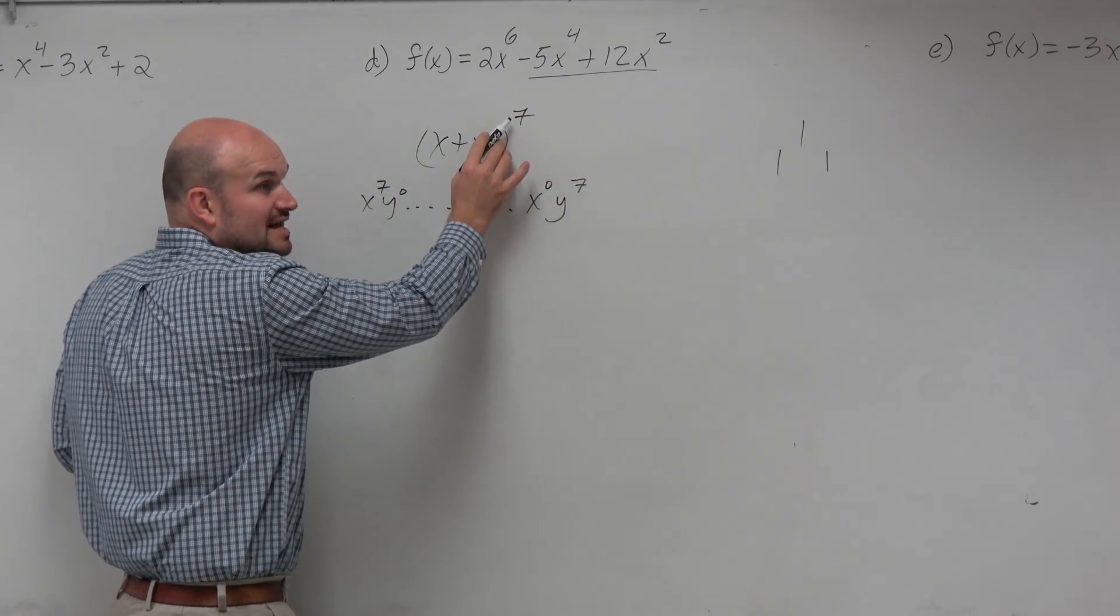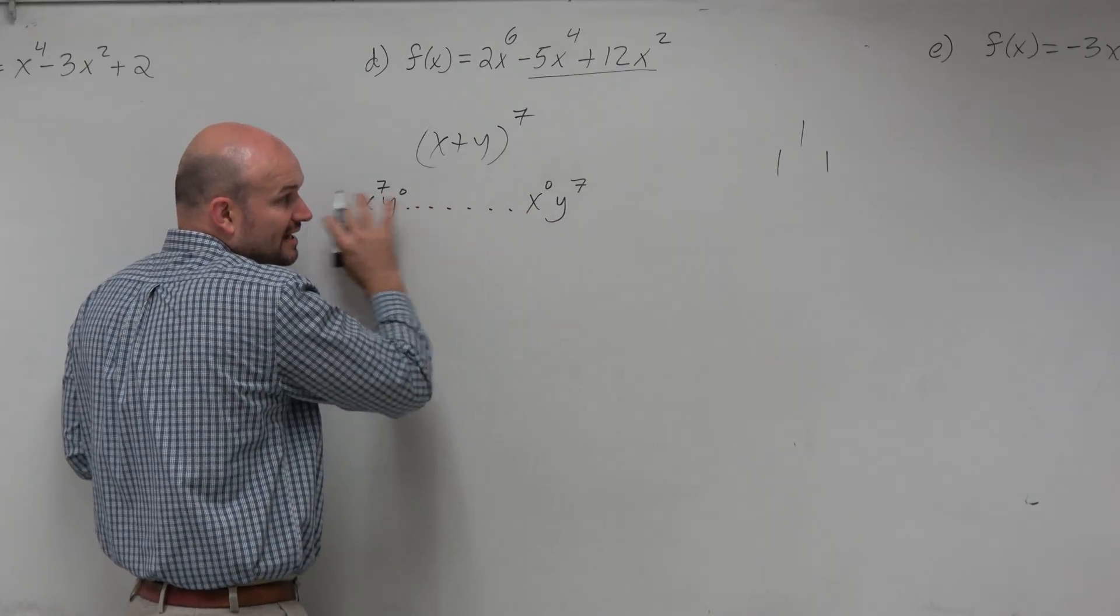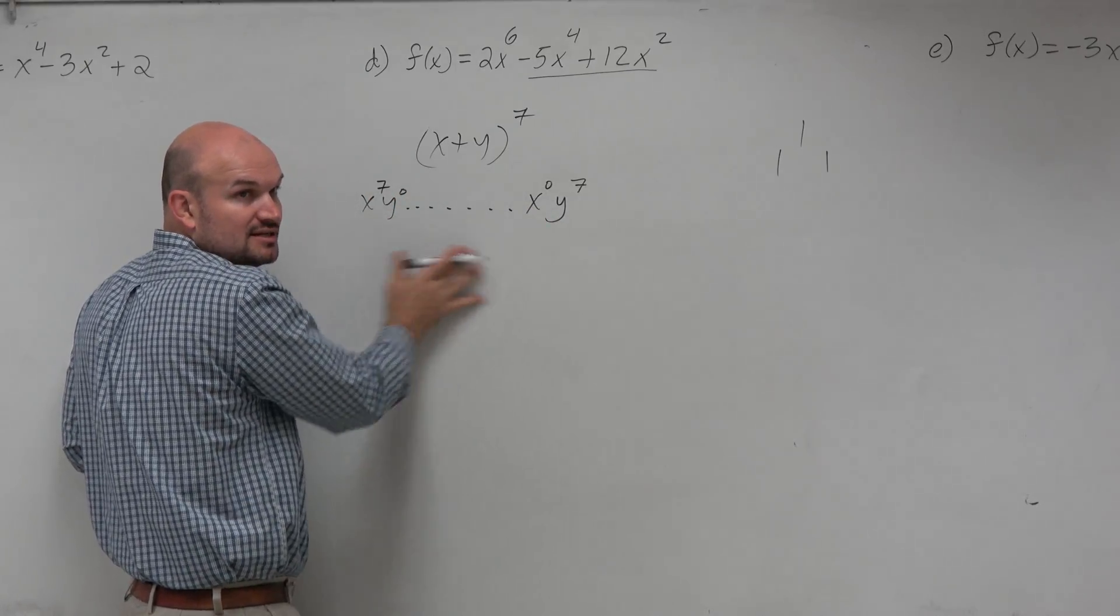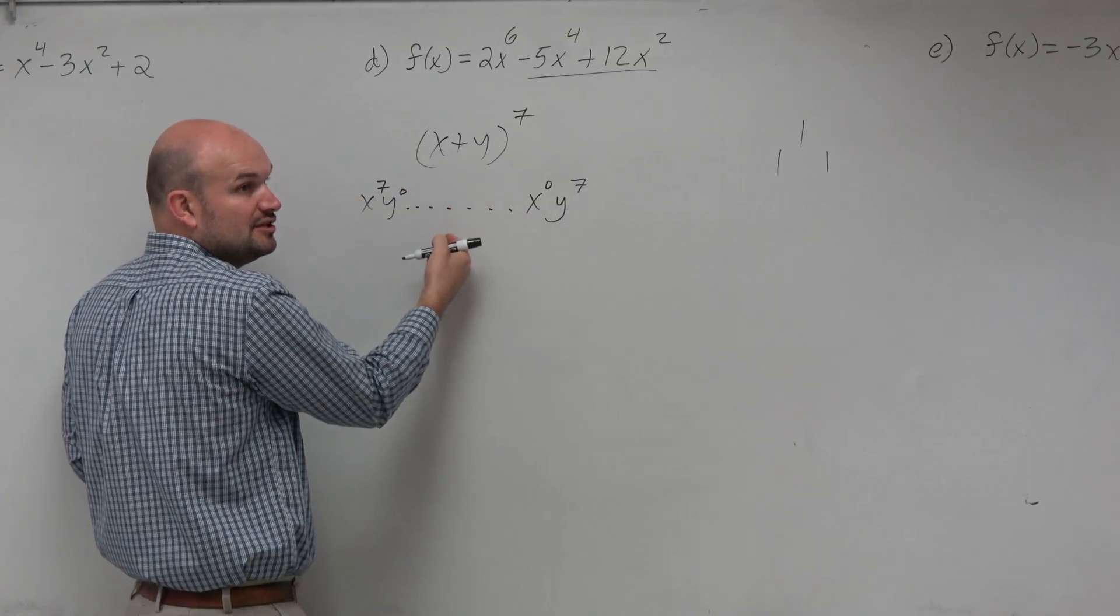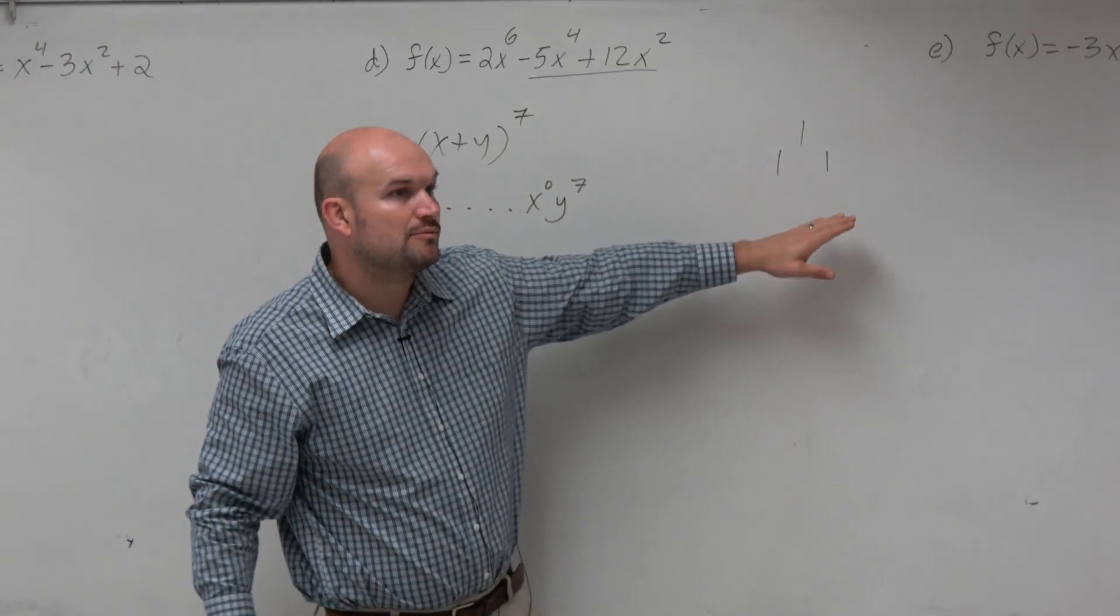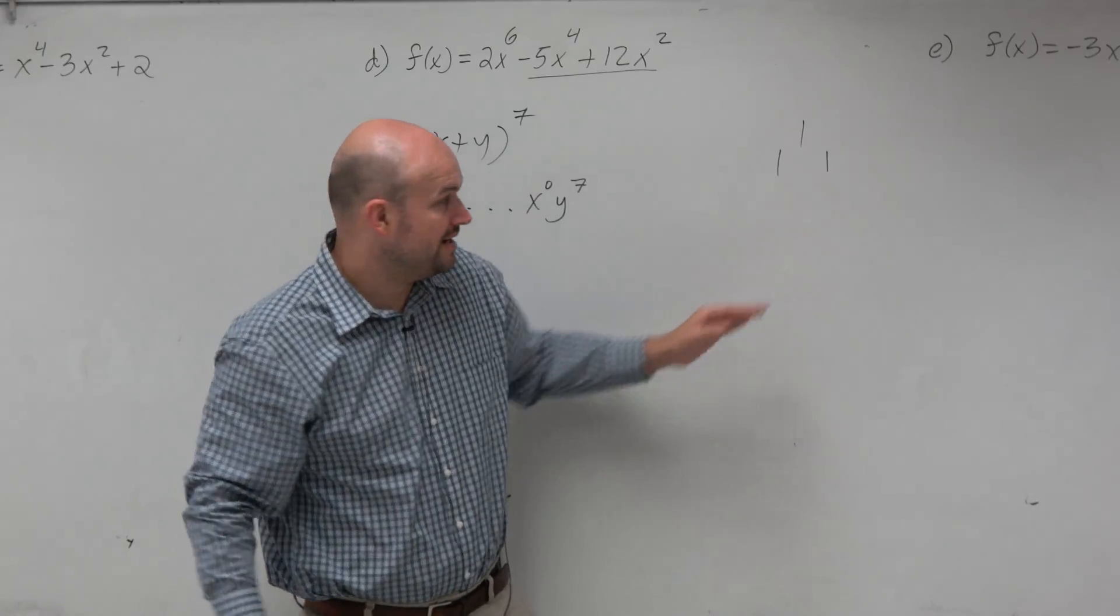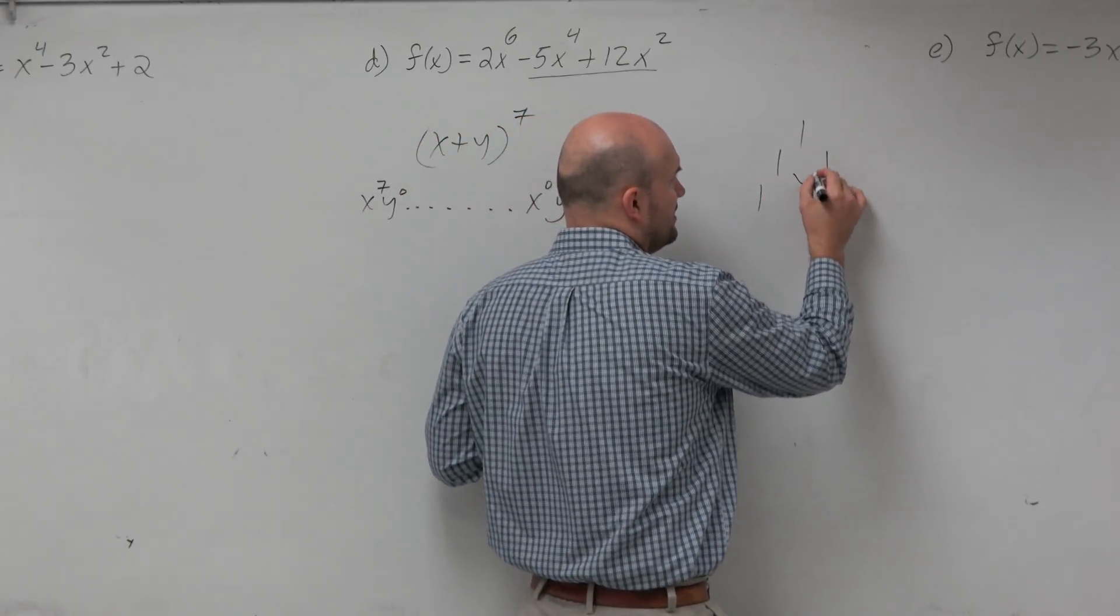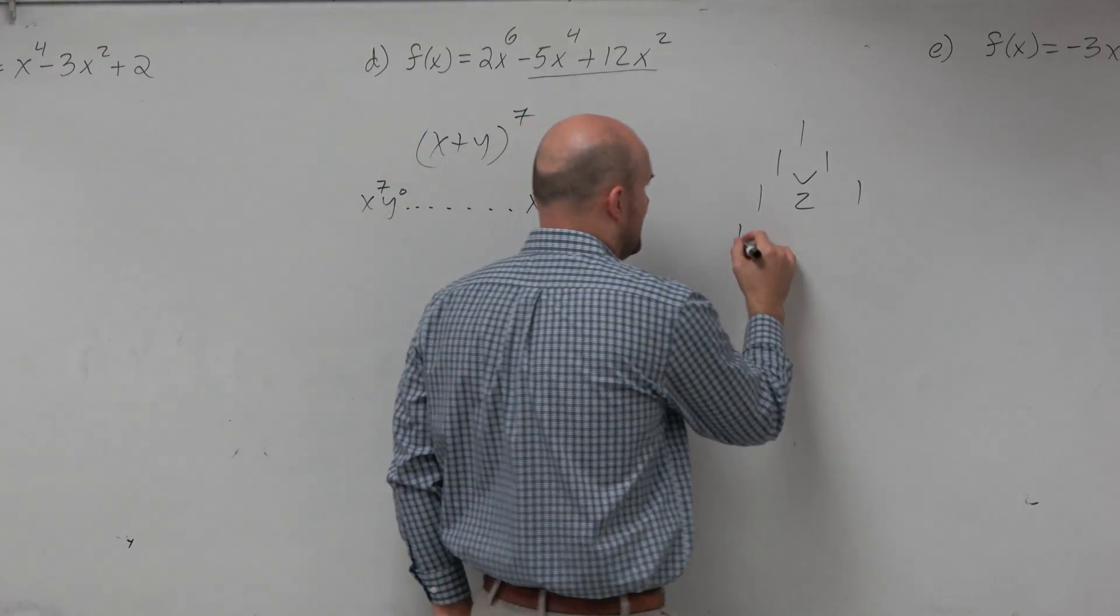So if we have a power to 7, that means there's going to be eight terms here. Now obviously if you were to do this, like actually do it out, I'm kind of cheating because I'm keeping my lesson short. But if you were to expand this out, you'd see there would be eight terms. So that means my row of coefficients needs to have eight terms. So we always start with one, and then we add these to get to the next level. Well, that's three terms, so I got to keep on going.